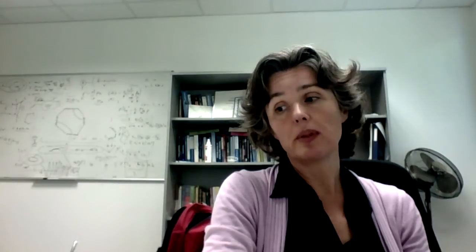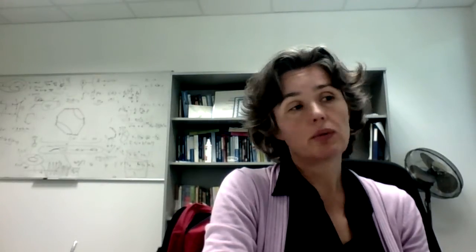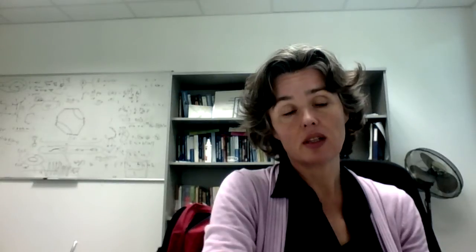So if we have a two-dimensional system and we put the system on a sphere, then the ground state will be non-degenerate, will be unique. Whereas if we put it on a torus or we put it on a torus with many handles, this ground state degeneracy will be non-unique and it will depend on how many handles the torus has.